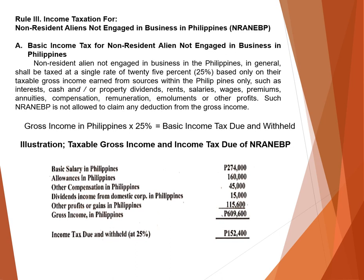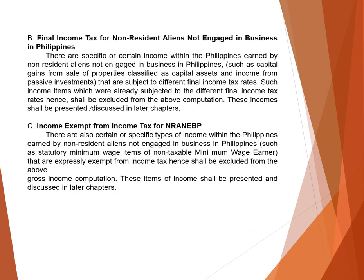Rule 3: Non-resident aliens not engaged in business in the Philippines (NRANEBP). The computation is simple — multiply gross income in the Philippines by 25%. There are no deductions allowed. For example, total gross income in the Philippines of 609,600 multiplied by 25% equals income tax due of 152,400. The same 25% rate applies to final income tax as well.